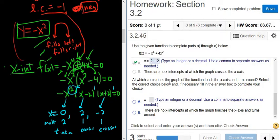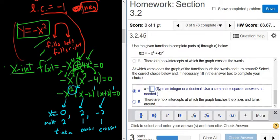And now it says, at which 0s does the graph of the function touch the x-axis and turn around? Well, at 0, the multiplicity is 2, and 2 is even. So whenever the multiplicity is even, it touches and turns around. So even touches and turns around, odd crosses.